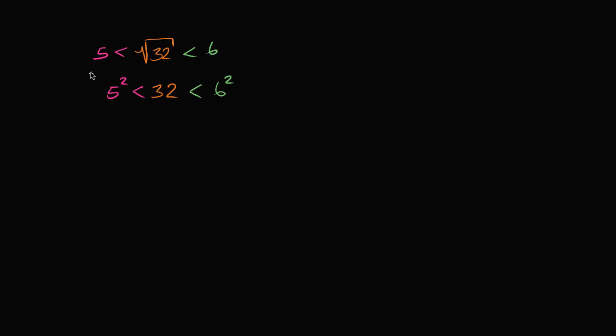Notice, all we did is we squared things, we raised everything to the second power, but the inequality should still hold. So the square root of 32 should be between 5 and 6. It's going to be 5 point something. Let's do another example.